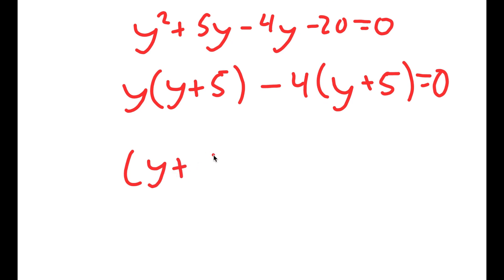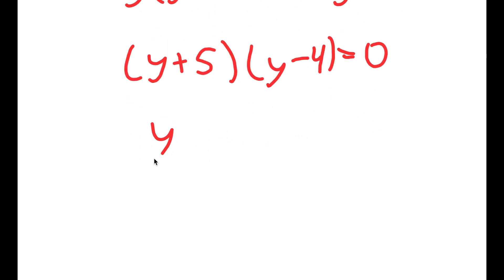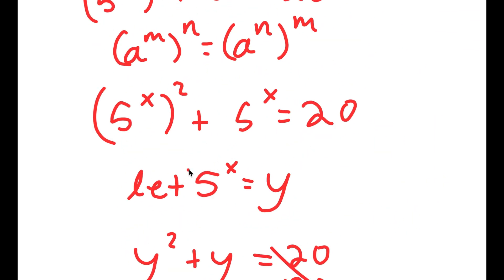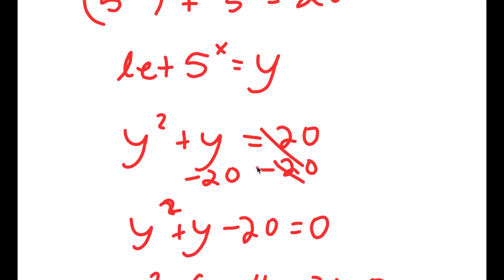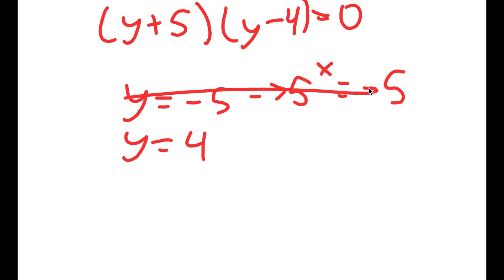Factoring out (y plus 5), I get (y plus 5)(y minus 4) equals 0, meaning y equals negative 5 or y equals 4. Remember that 5 to the power of x equals y. For y equals negative 5, we'd have 5 to the power of x equal to negative 5 — but you can't raise a positive number to get a negative result, so this solution is rejected.